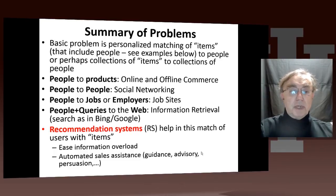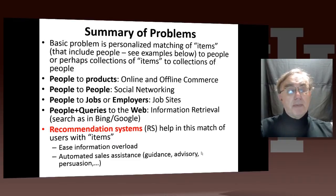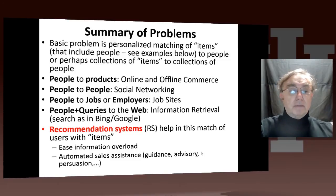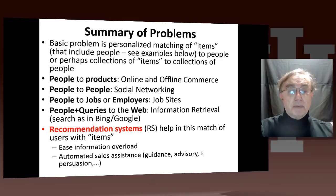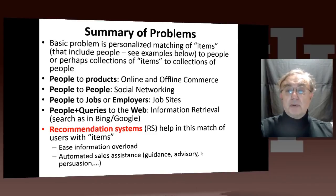The examples we have are people to products — that's online and offline commerce. People to people — that's social networking: Facebook, LinkedIn, and so on. We have people to jobs or employers — that's job sites like CareerBuilder and Monster. And people plus the queries that people make to the web — that's information retrieval or web search, which we'll discuss as a separate major use case later on in this course.